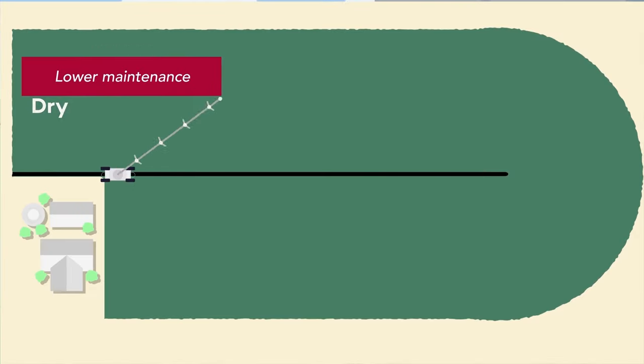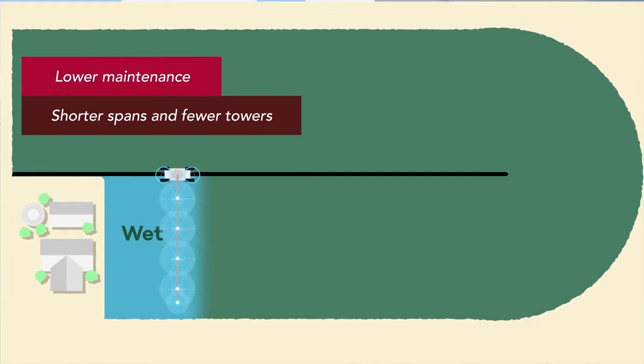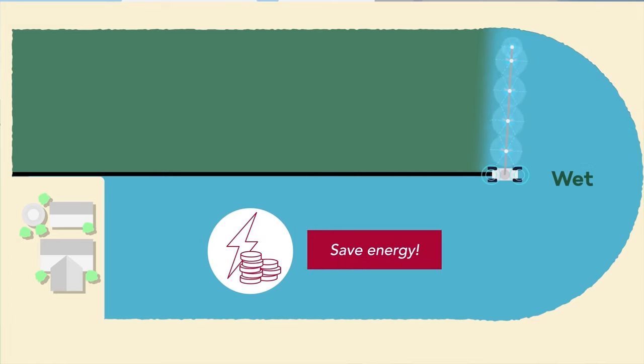When you cover more ground with a Pivoting Lateral system, you spend less on maintenance and shorter spans and fewer towers require lower water pressure, helping you save energy.